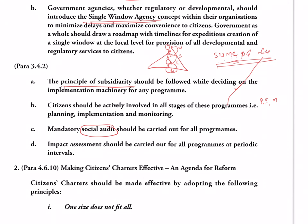After the implementation of the program, there has to be an impact assessment. So the recommendations for developmental functions are: principle of subsidiarity, participation, social audit, and impact assessment. I call it IPS squared - impact assessment, participation, social audit, subsidiarity principle.